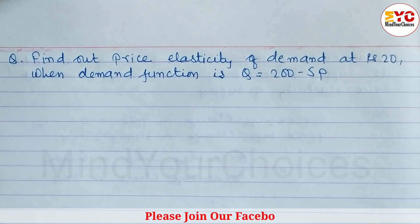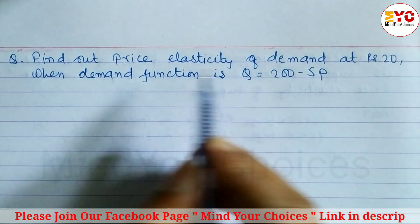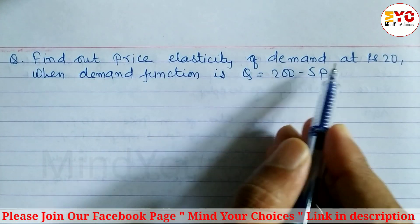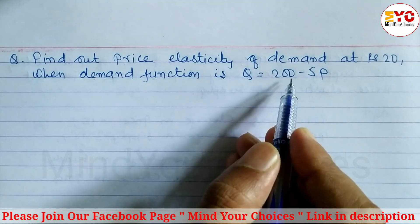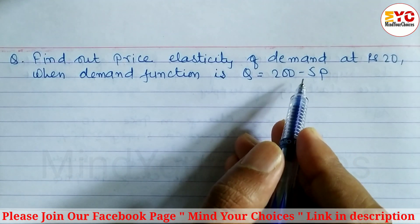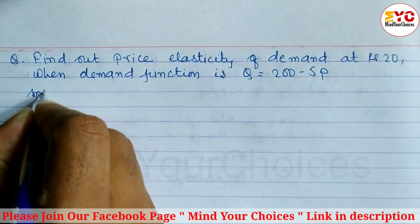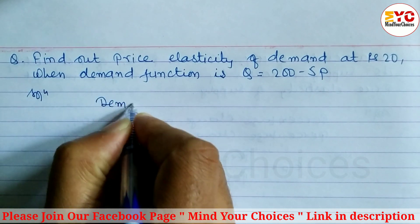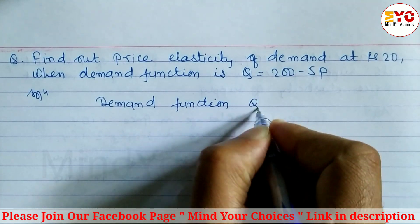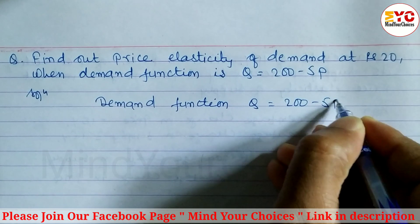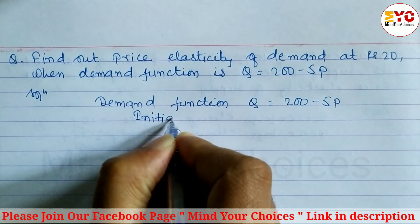This question is taken from elasticity of demand and supply. We have to find out the price elasticity of demand at rupees 20. The demand function is given as q = 200 minus 5p, and the initial price is given as rupees 20. Let's take a start — first of all, we write down the demand function: q = 200 minus 5p, and price p = 20.